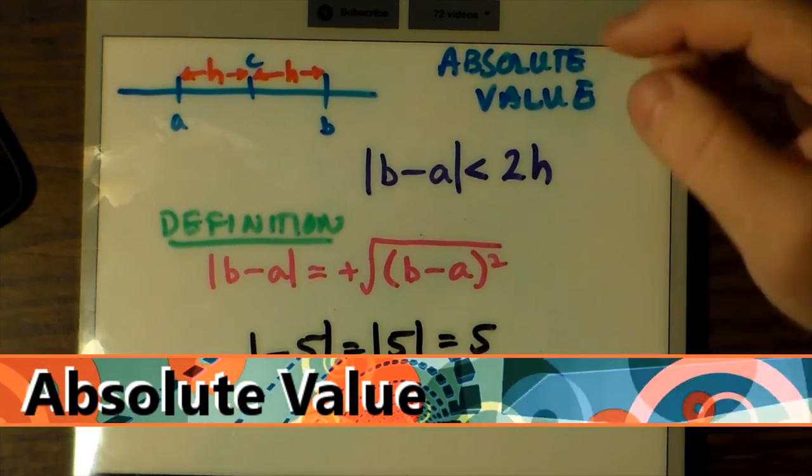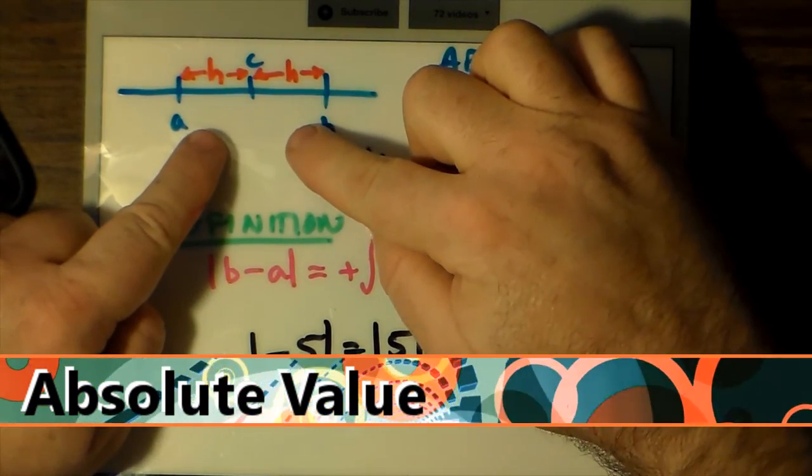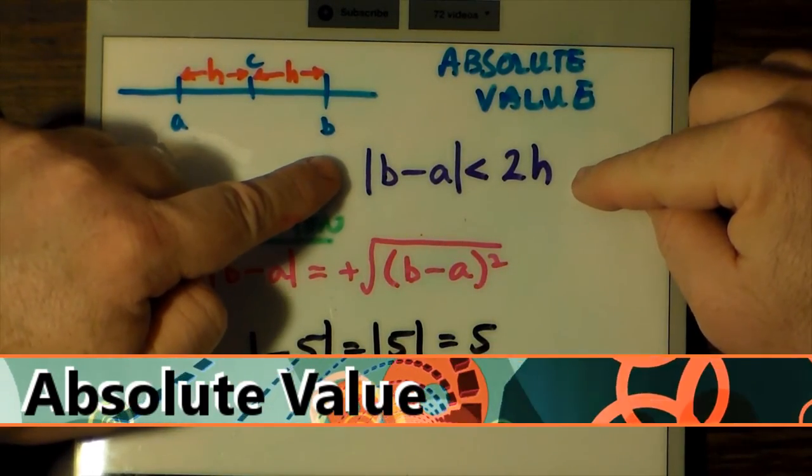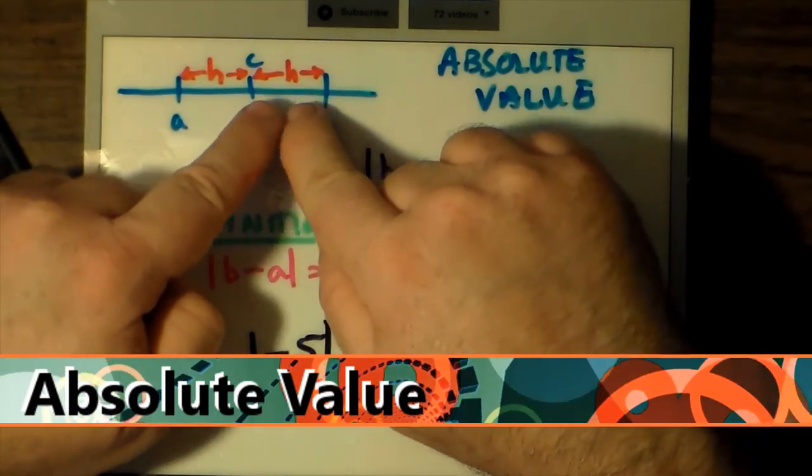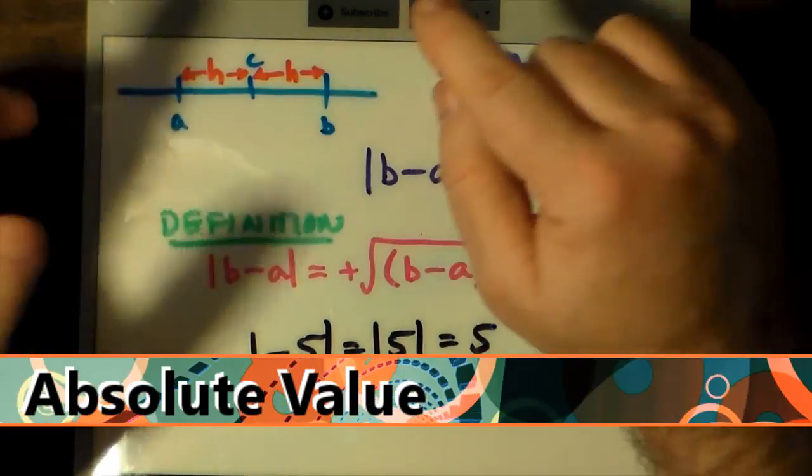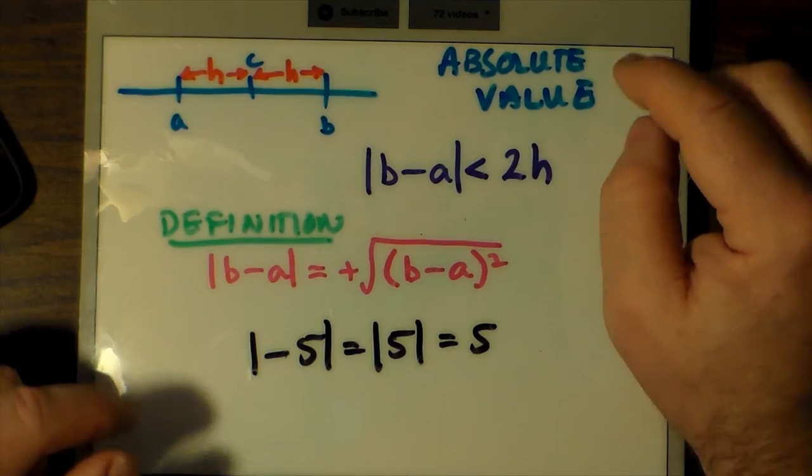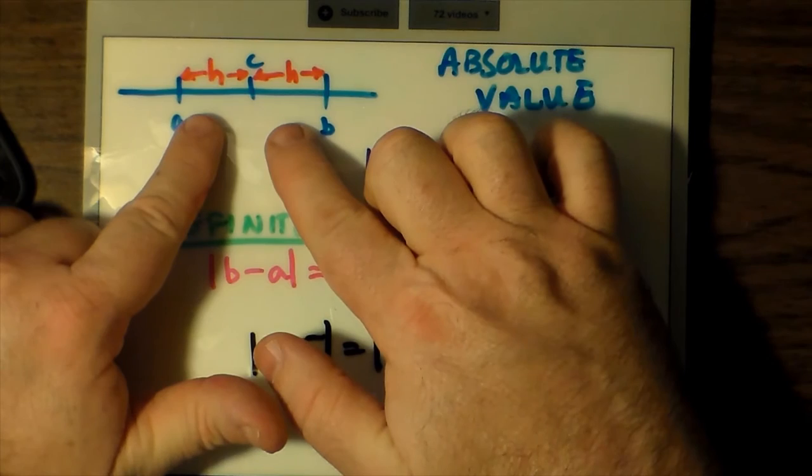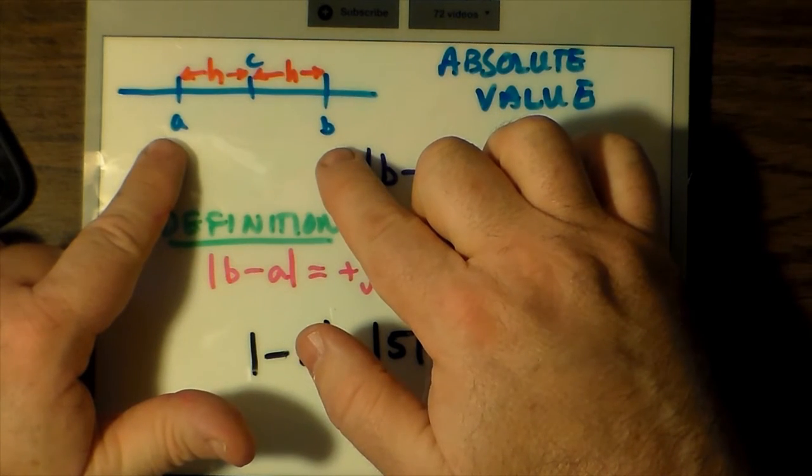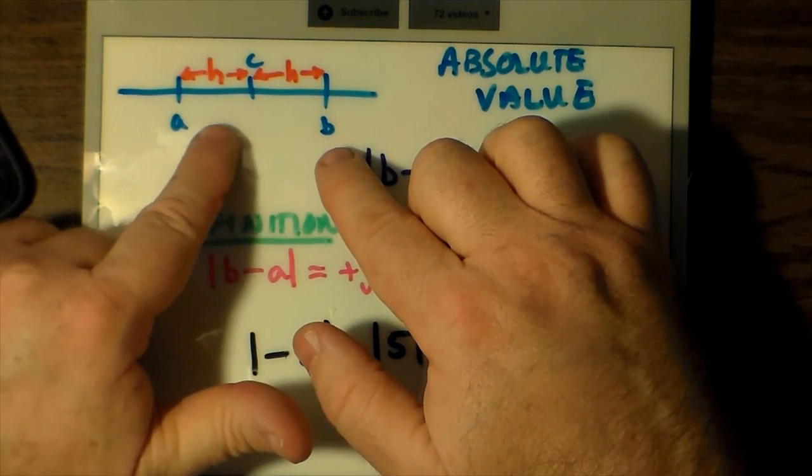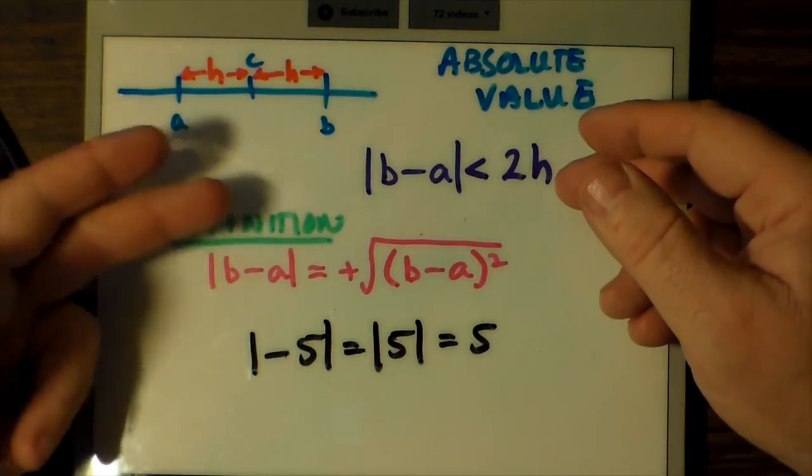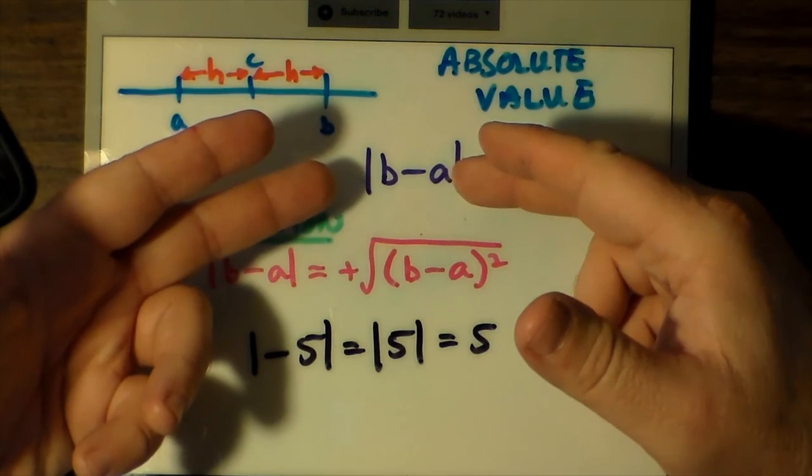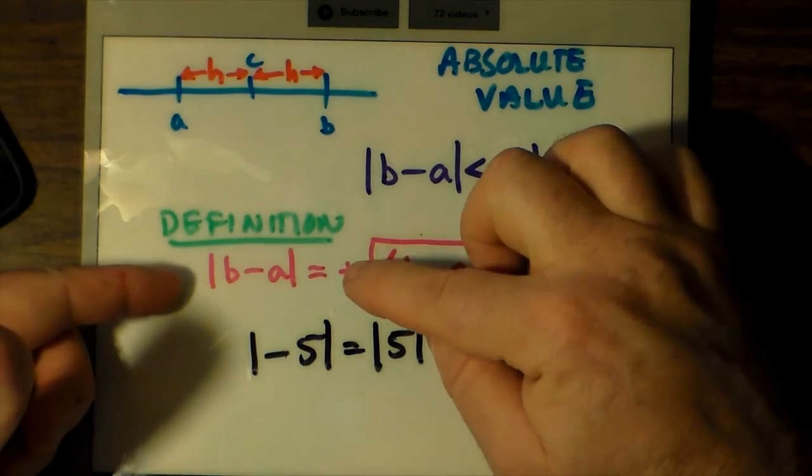Selecting values in a symmetric neighborhood between a and b involves choosing values where the absolute value of b minus a is less than 2h, where a and b are the endpoints of the open interval (a, b) and h is the distance between c and either a or b. The vertical bars surrounding b minus a denote absolute value, or the distance b minus a is from zero. Absolute value can be defined by the formula: absolute value of b minus a equals the positive square root of the square of b minus a.